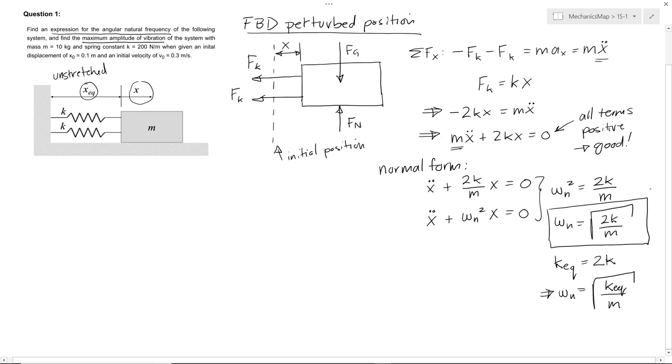So we found an expression for the angular natural frequency. That was part one. Now we need to find the maximum amplitude of vibration of the system. So we know this differential equation has a solution of the form x of t. So the displacement at any time equals c sine omega n t plus phi. And c is our amplitude.